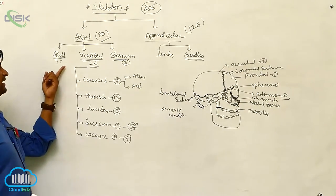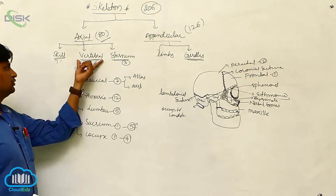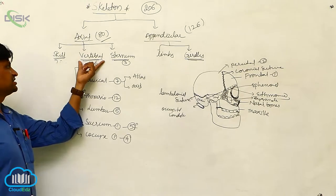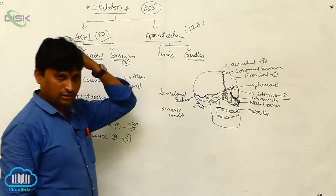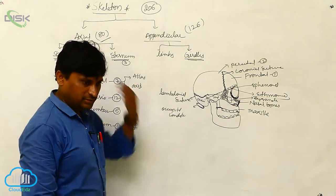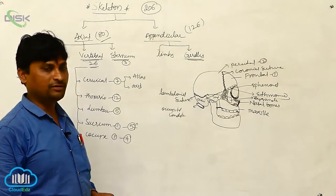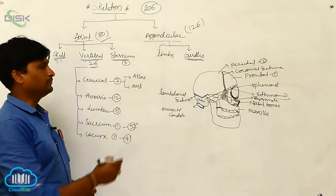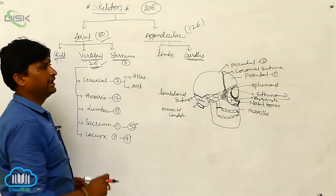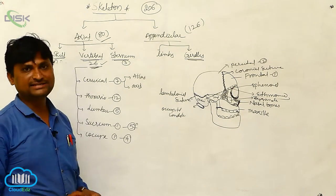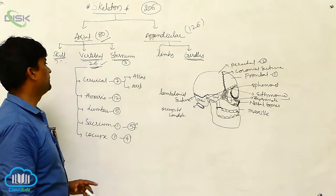After completion of the skull, the next part of the axial skeletal system is the vertebral column. The vertebral column gives the complete back formation of the body and consists of 26 bones.